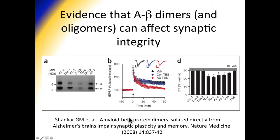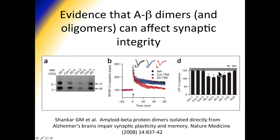Here is one piece of data from a paper from Dr. Selko's group, where they actually isolated dimers — the smallest oligomers that can occur — from Alzheimer's disease brain lysates. These were soluble oligomers, not part of plaques. They took Alzheimer's disease or control brain lysates, isolated these soluble oligomers, and sprinkled them onto brain slices in culture. When they measured long-term potentiation — an electrophysiological proxy of memory — the normal LTP seen under control conditions was markedly reduced when incubated with Alzheimer's disease brain lysate, indicating a reduction in synaptic plasticity caused by these oligomers of A-beta.